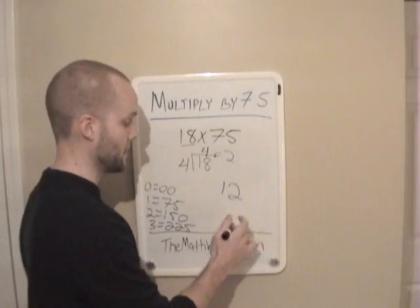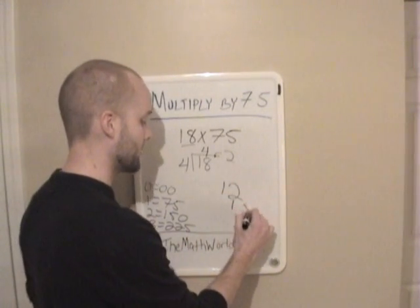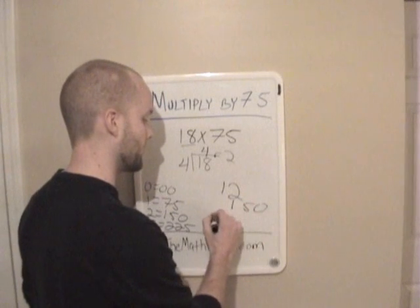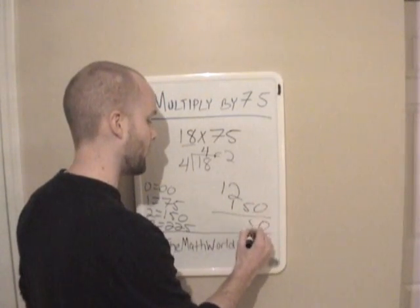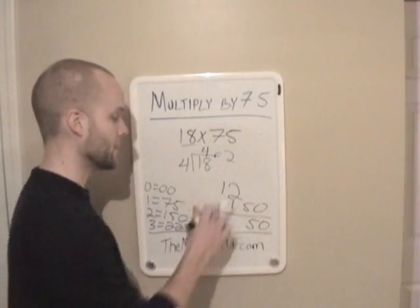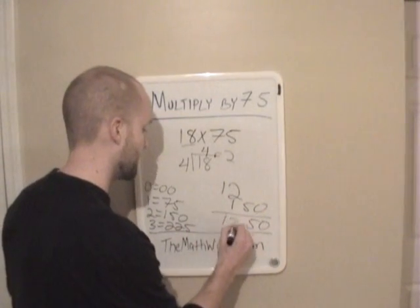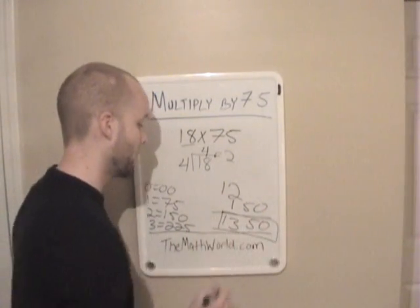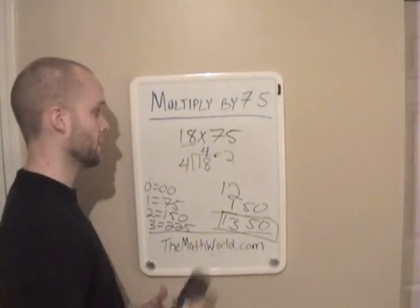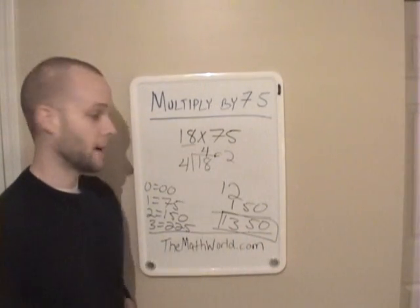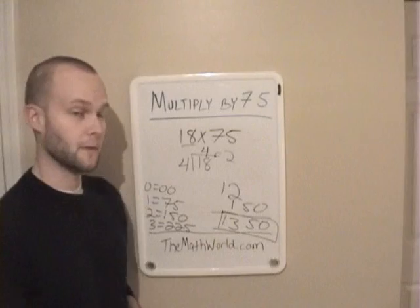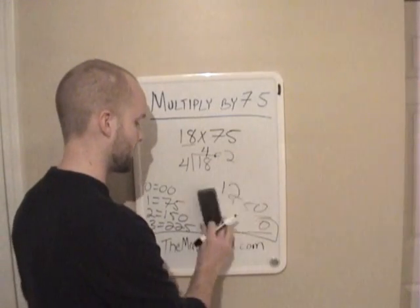So instead of writing 150 on the end, we're actually going to add this to this number. So the 0, 5 get added to the end and we're going to add 1 to the 12. So our answer here is 1,350. So 18 times 75 is 1,350.